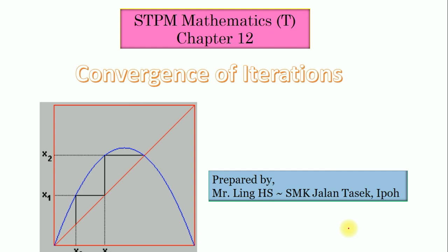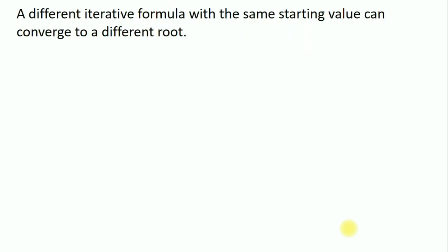Now let me show you how the convergence of iteration is affected by different factors. Let us see the first one, with an example.